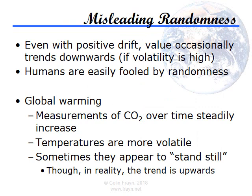That idea is really important to understand. Even in the downward section of the graph, the values were still being created by the identical random process with an upwards trend that created the rest of the graph. Randomness, as I've said before, can be extremely misleading. Even with a positive drift, the value will occasionally trend downwards if the volatility is sufficiently high to temporarily swamp the effect of the bias. The most obvious example of this is global warming. Measurements of carbon dioxide in the atmosphere have been increasing steadily over time — this much is absolutely undeniable — and science tells us that carbon dioxide in the atmosphere traps heat and causes global warming. This much is also absolutely undeniable. But that doesn't mean that temperatures will go upwards without fail every year in every single location. That would be impossibly unlikely — essentially you'd be saying that every graph like the ones we played with should be monotonically increasing, always going upwards.